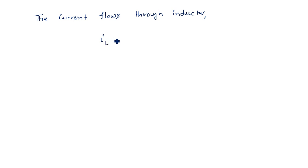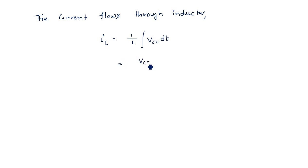The inductor current IL is given by: IL = (1/L) · ∫VCC dt = VCC·t / L. This is the basic expression for the inductor current IL.